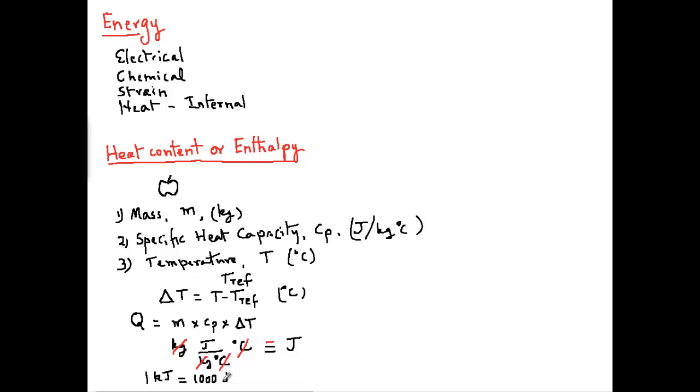Now we will do an actual calculation. A typical apple weighs approximately 0.15 kilograms. Its temperature, let's say, is 20 degrees Celsius, and its specific heat capacity we find out from a textbook. The specific heat for apples is 3760 joules per kilogram degree C. We will use a reference temperature of 0 degrees C. It will make our calculations easy.